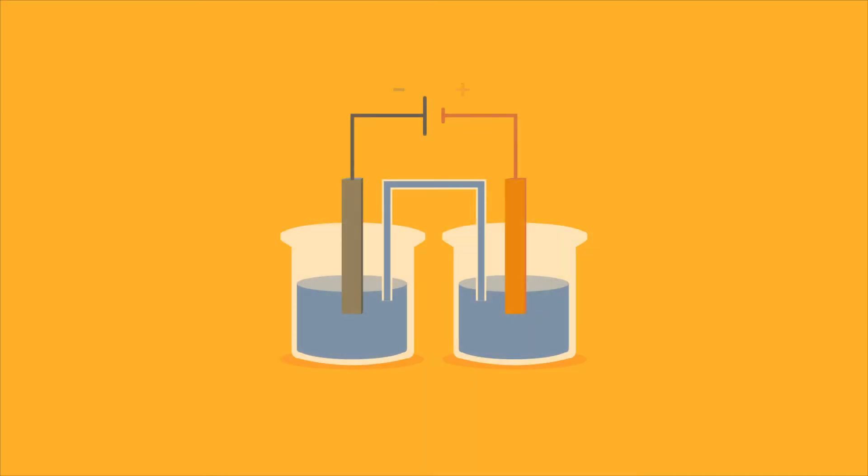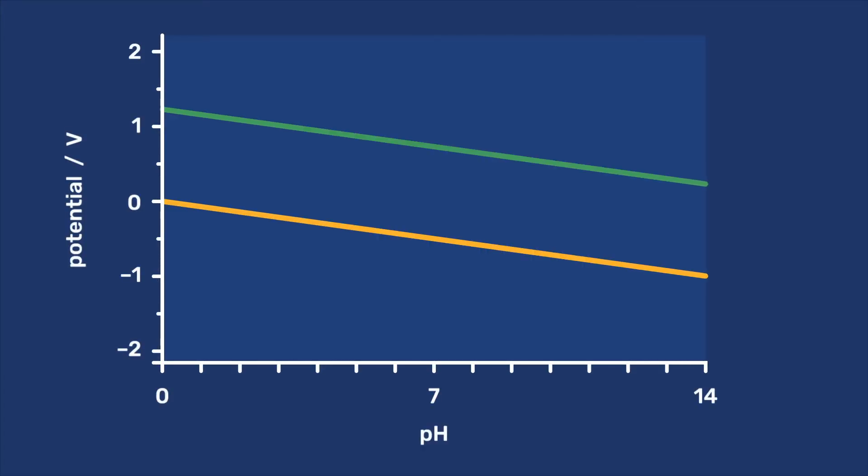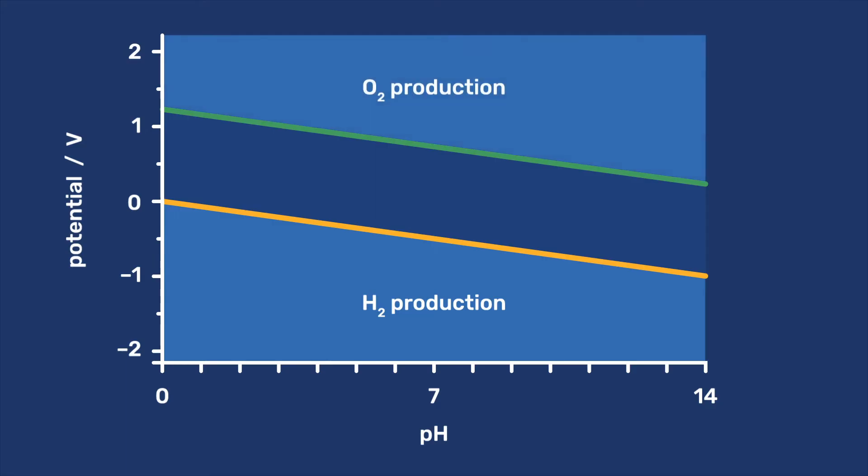In this video, we introduce basic concepts of electrochemistry and apply them to determine the conditions needed to produce hydrogen and oxygen from water by electrolysis.